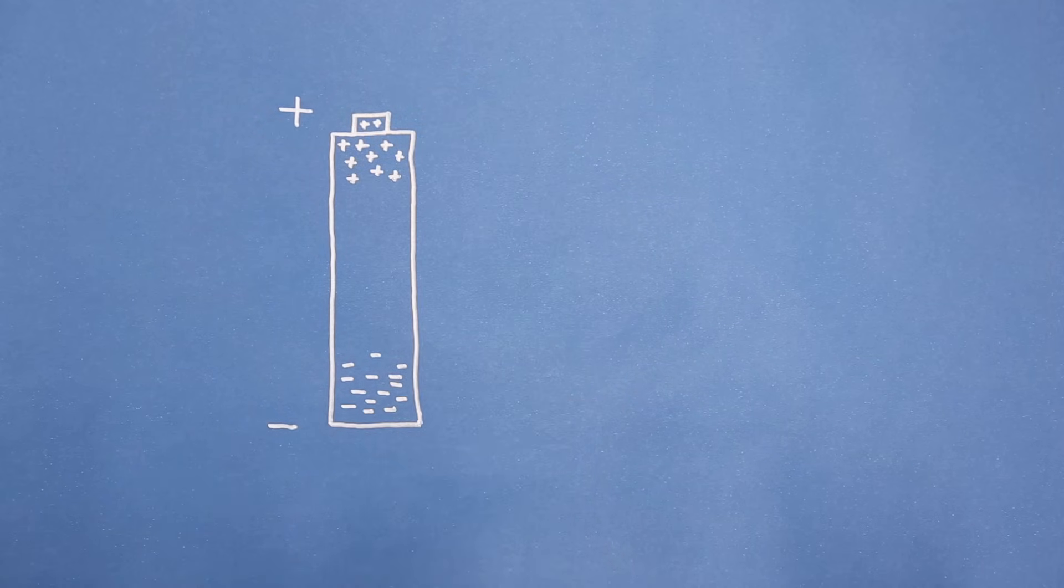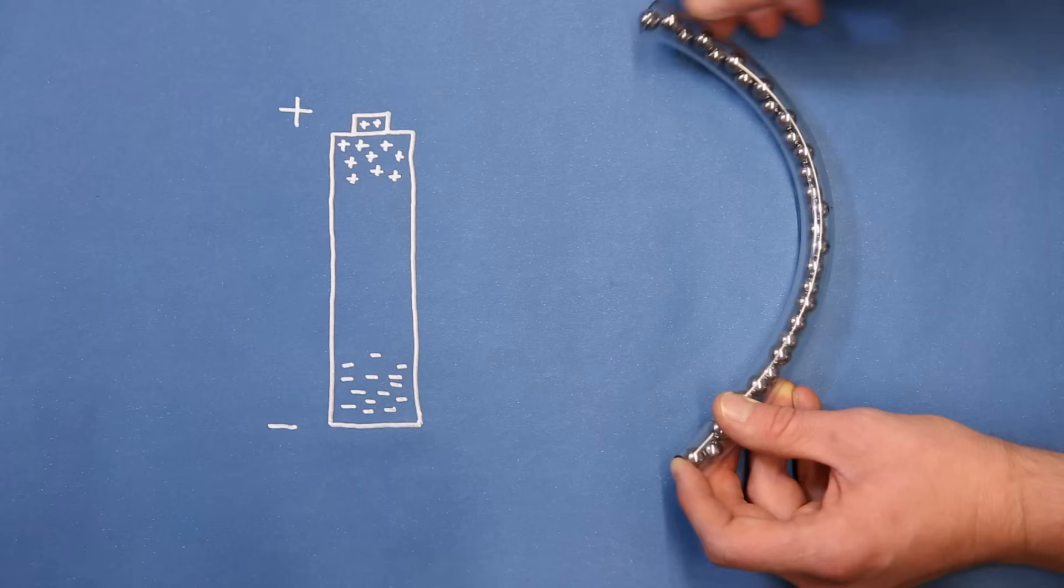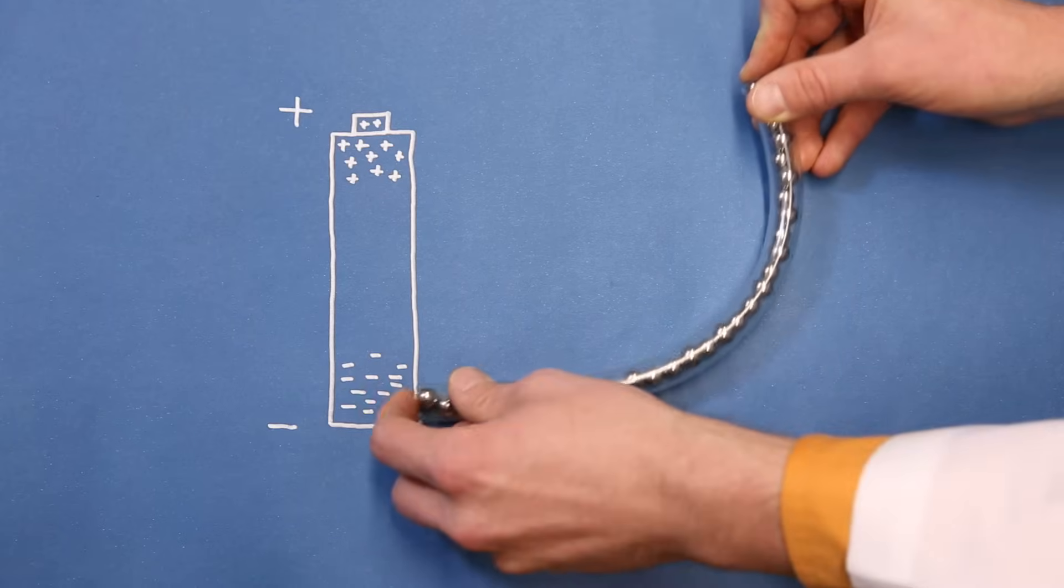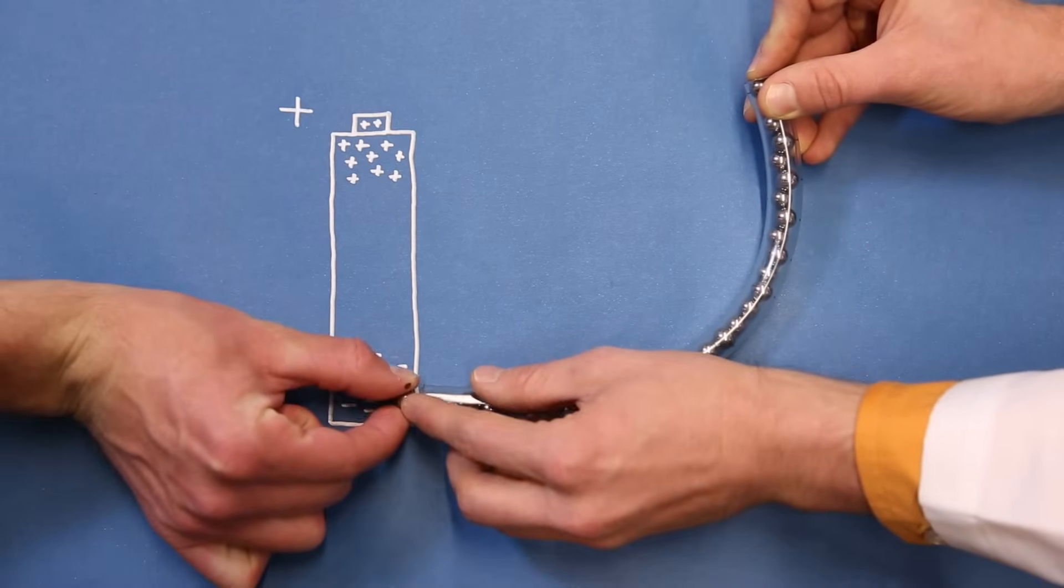The charges want to balance out, but the only way to do that is for the excess electrons to flow around the battery through a conductor that we provide. If we connect a piece of wire to the negative terminal, the electrons will push against the electrons in the wire.